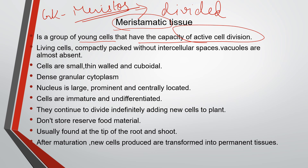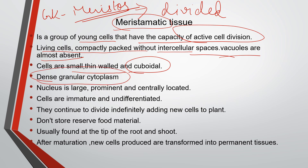The characteristics of meristematic cells are: they are all living cells which are compactly packed without intercellular spaces. They rarely have vacuoles — vacuoles are mostly absent. The cells are small, thin-walled, and cuboidal, and they have dense granular cytoplasm. The nucleus is large, prominent, and centrally located in this type of tissue.